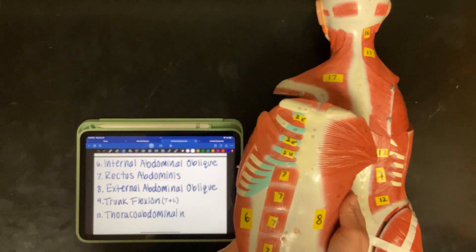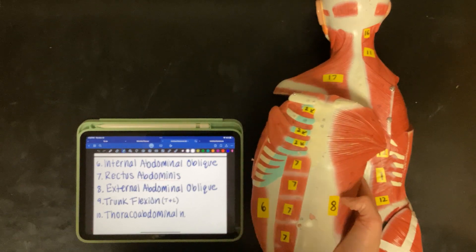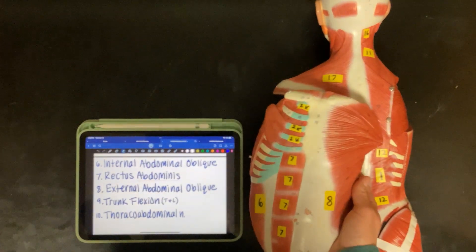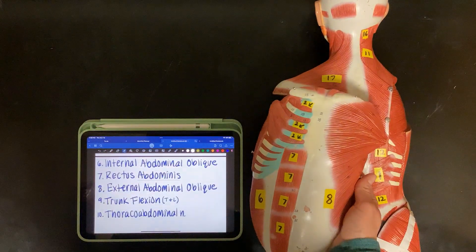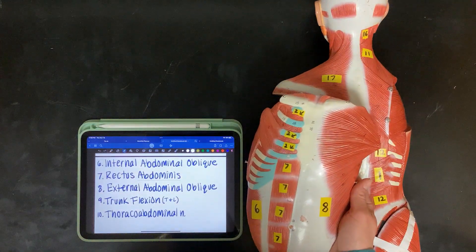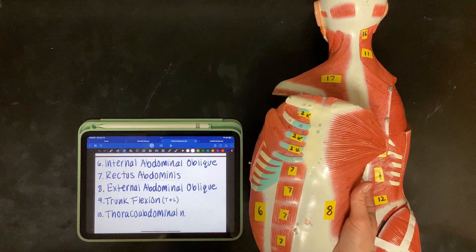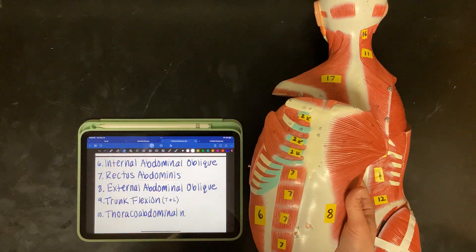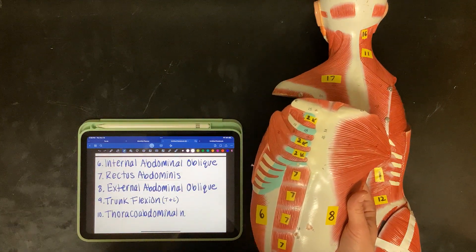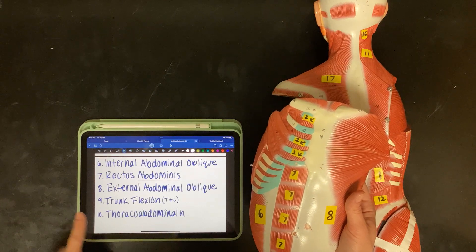Seven is our rectus abdominis. And eight is the external abdominal oblique. They all do trunk flexion. So of the thoracic and lumbar regions. That's the trunk.